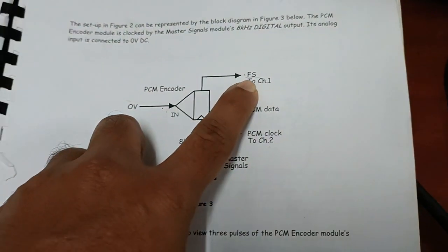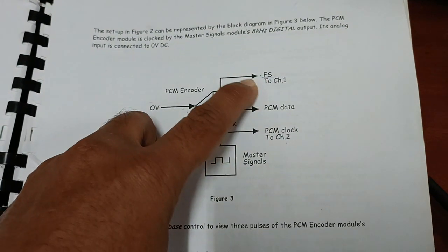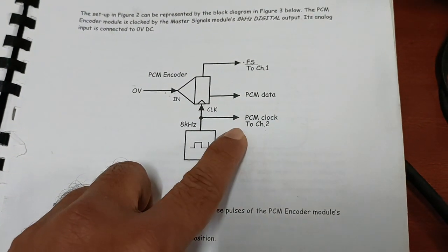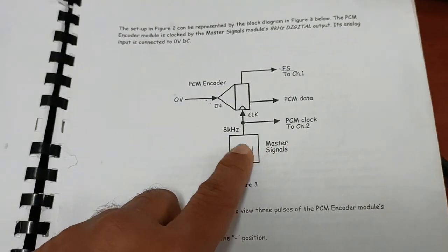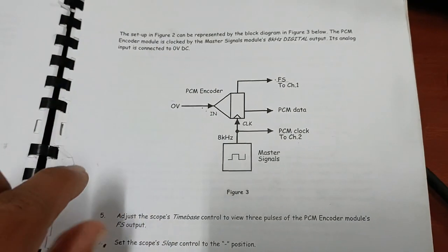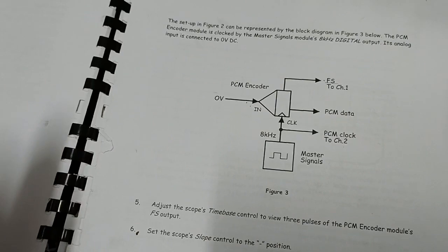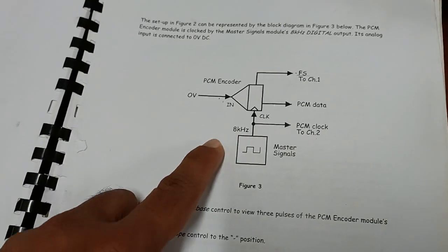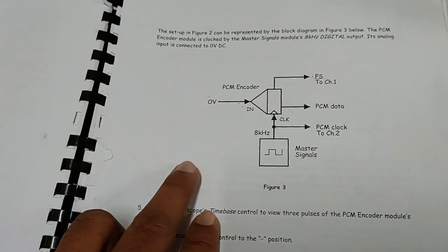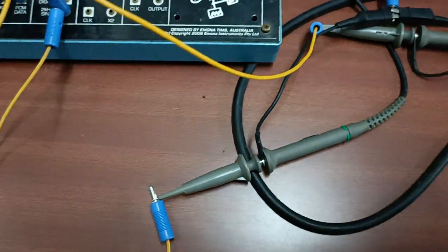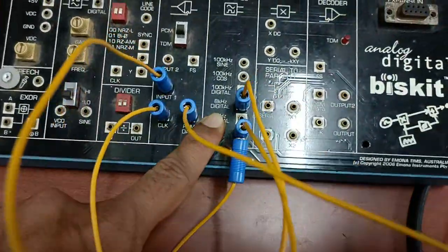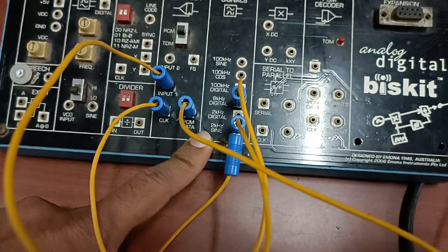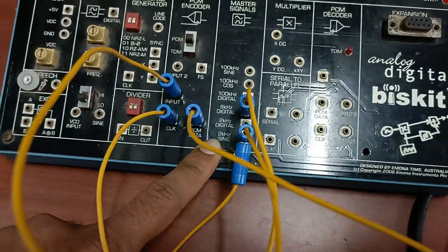There is a frequency synchronization output signal, PCM data which is encoded, and the PCM clock. On the CRO we will show the input sine wave signal and the PCM encoded data. Since we can only show two signals at a time on the CRO, we will use the input and output. The 8 kHz sampling is used because the input signal is 2 kHz, and according to the Nyquist criterion, the sampling frequency must be greater than or equal to twice the maximum frequency of the input signal.